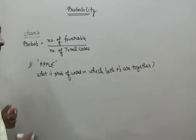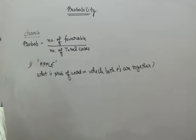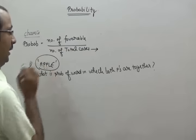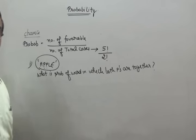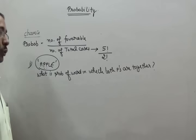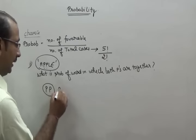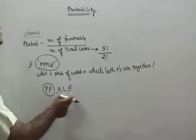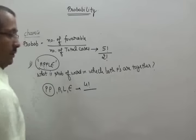For finding my probability, I need the total number of cases as well as the total number of favorable cases. For total cases: there are 5 alphabets and 2 P's are repeated, so that would be 5 factorial upon 2 factorial. For favorable cases, since both P's are together, I will make a group of the 2 P's. That gives us 4 units: the PP group, A, L, and E.